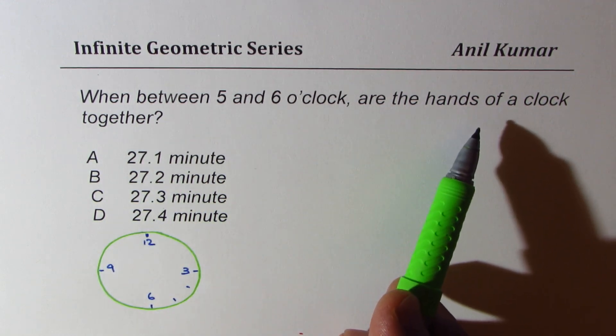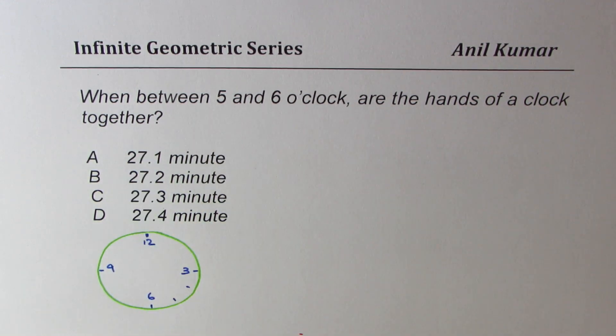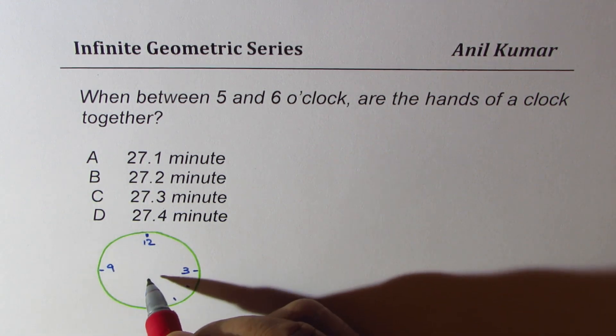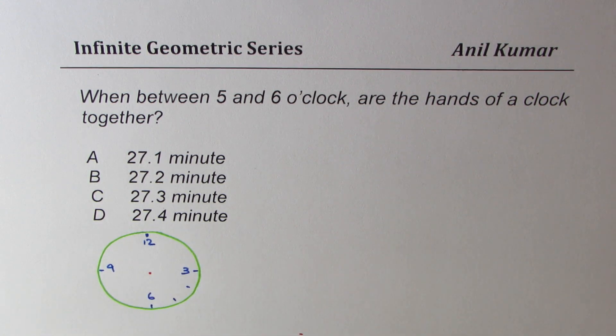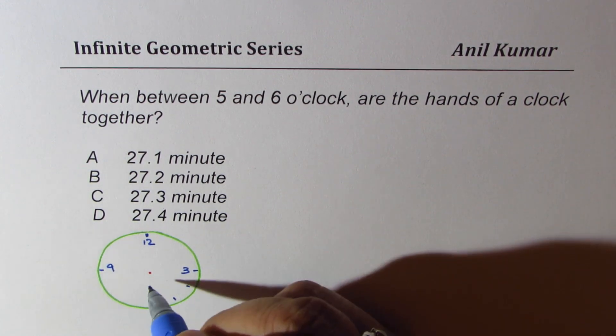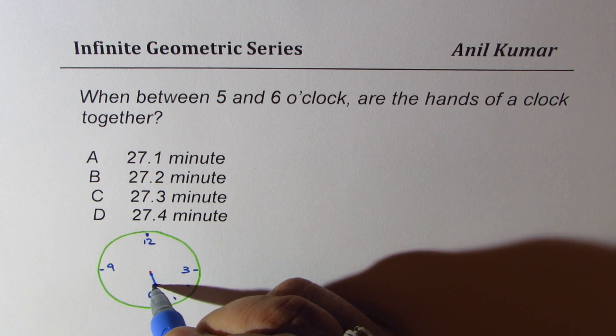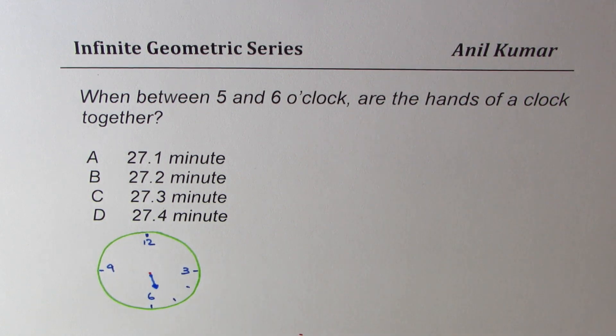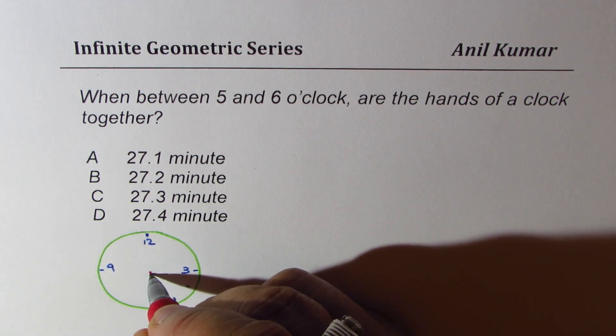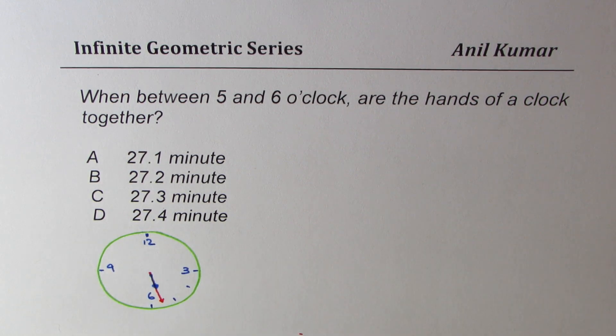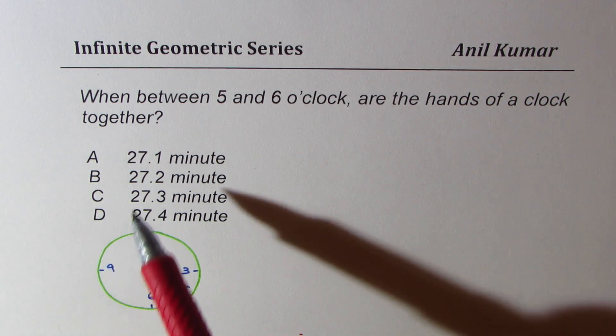So the question is when between five and six o'clock are the two hands of the clock together. So if you visualize between five and six, what we are looking for is that the smaller needle is the hour needle, which is let us say something like this, and the minute needle is over it. So that is the situation which we are looking for.